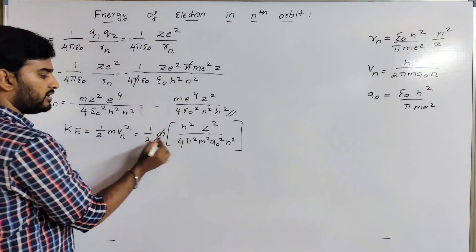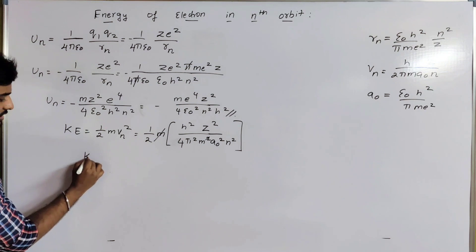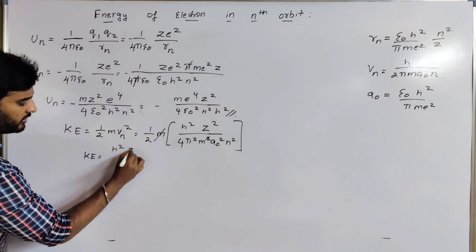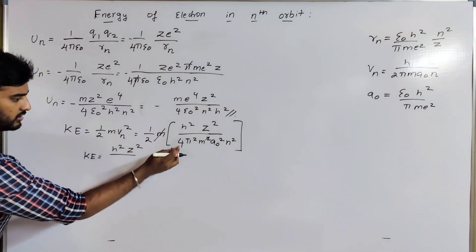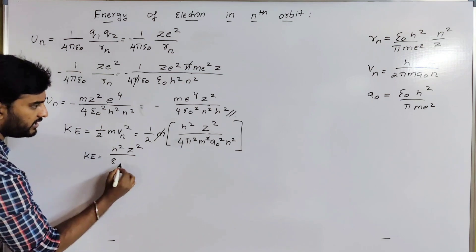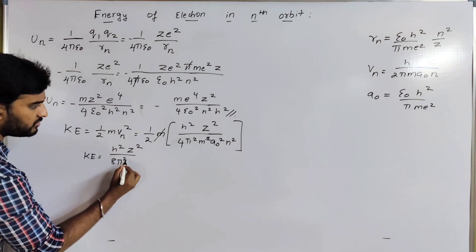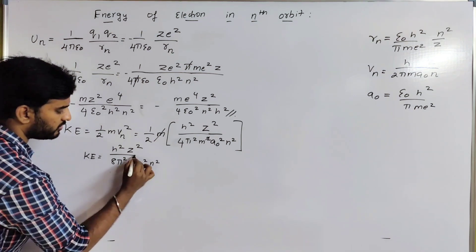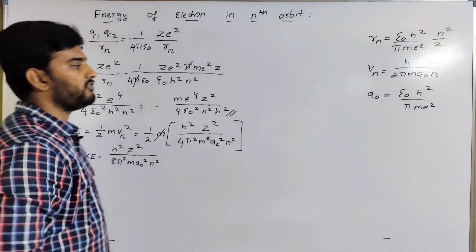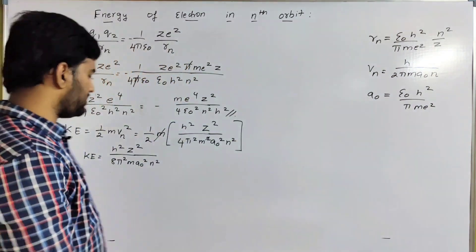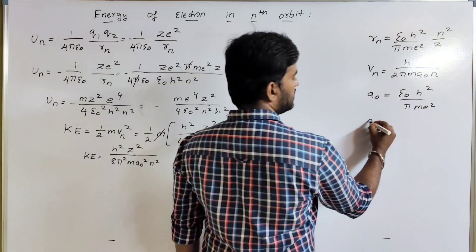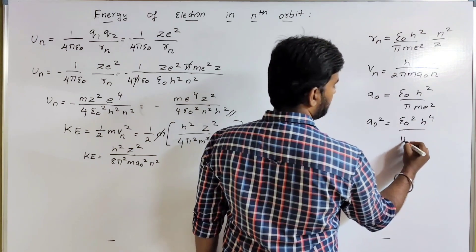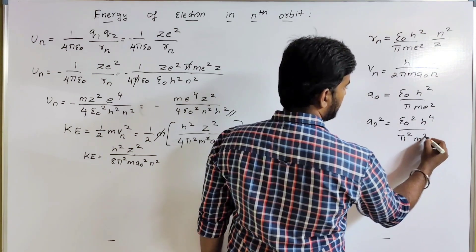If we cancel m with m, the kinetic energy equals h squared z squared divided by 8 pi squared m a₀ squared n squared. Now we need to find the value of a₀ squared. a₀ squared equals ε₀ squared h to the power 4 divided by pi squared m squared e to the power 4.